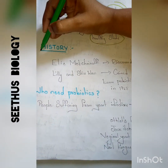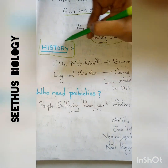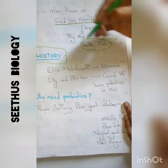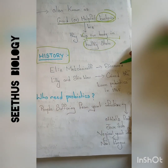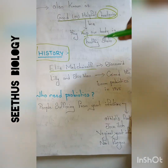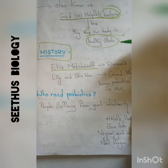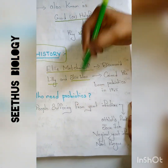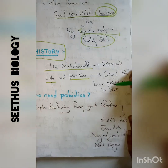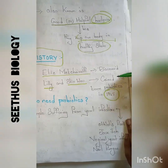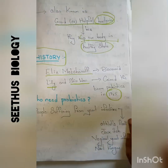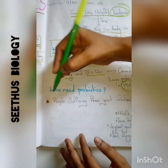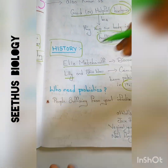Coming to the history of probiotics: probiotics were discovered by the scientist Metchnikov. The term 'probiotic' was given by the scientists Lily and Stilwell in the year 1965. That is the history of probiotics.